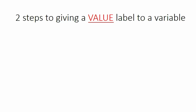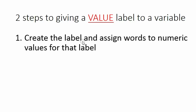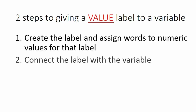There are two simple steps to giving a value label to a variable — that means there are two simple lines of code. In the first line of code, you create the label and tell Stata what words go with what numbers, assigning words to the numeric values for that label. Then in the second step, the second line of code, you simply connect the label you created in the first step with the variable you would like it to be with.